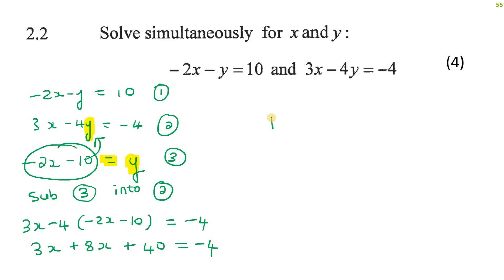So now I end up with 11x on the left and then minus 4 minus 40 on the right because I took this 40 over. And so that's going to give us 11x equals minus 44. Divide both sides by 11 and x would be negative 4.